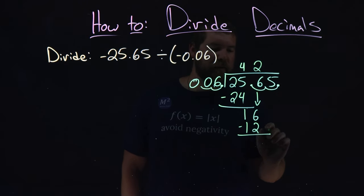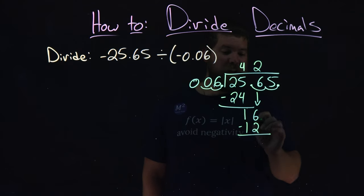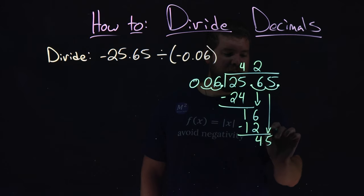We subtract. 16 minus 12 is 4. And we bring down the 5.